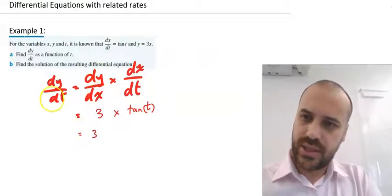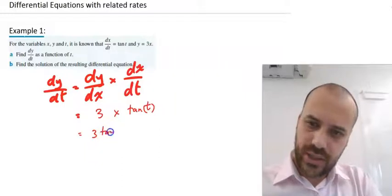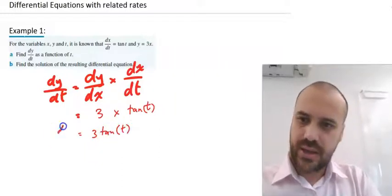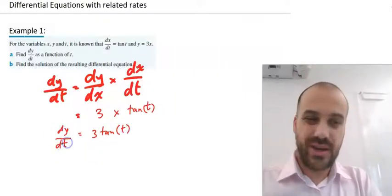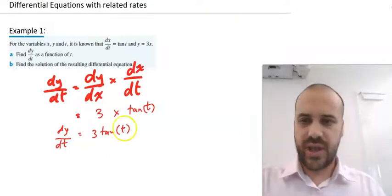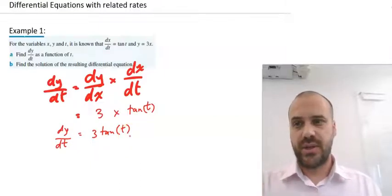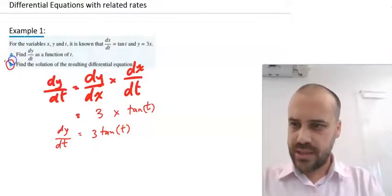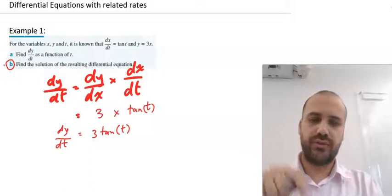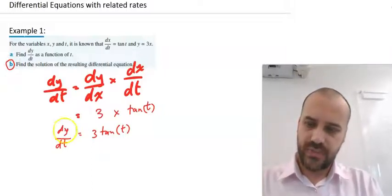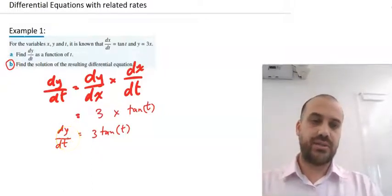So we know that dy/dt equals 3 tan t. And in the previous video, we essentially stopped there. We might have subbed a value in for t to find the rate at a specific time. But part b here says find the solution of the resulting differential equation. In other words, we just need to integrate dy/dt.